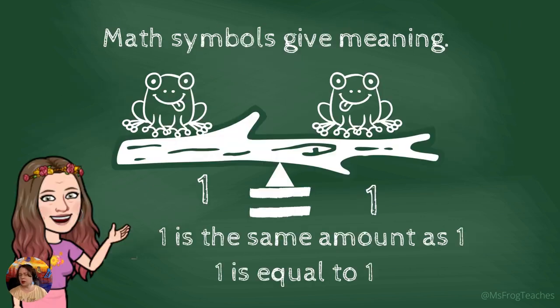Now let's talk a little bit about this equal sign. What does it actually mean? Well, this symbol shows that things on either side of the equal sign are the same amount. So let's think about two frogs on a log.